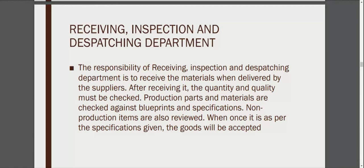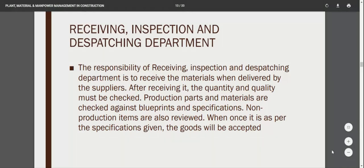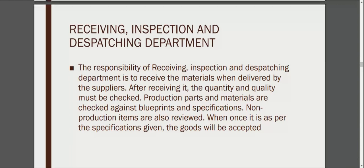The responsibility of the receiving, inspection and dispatching department is to receive materials when delivered by suppliers. After receiving, the quantity and quality must be checked — this is the QA and QC process. Production parts and materials are checked against blueprints and specifications. Once materials are confirmed as per specification, the goods will be accepted; otherwise they will be rejected and the supplier asked to replace the material with one that matches the specification.